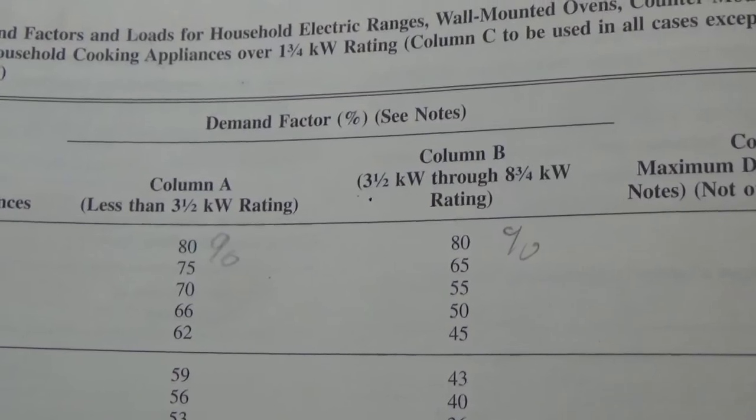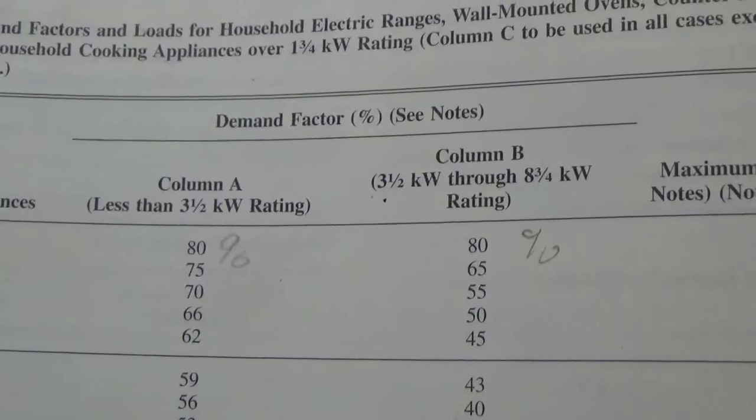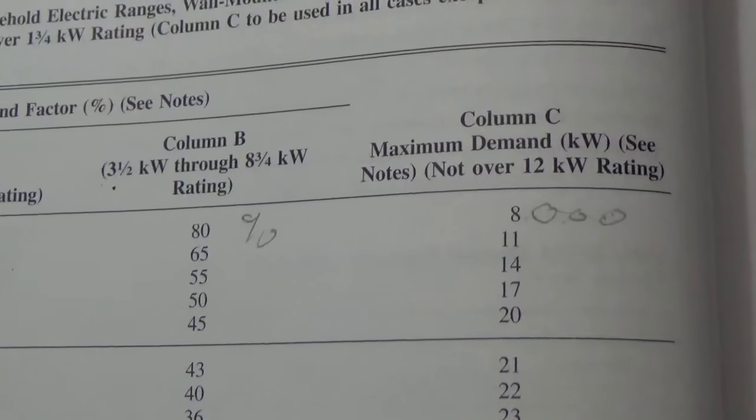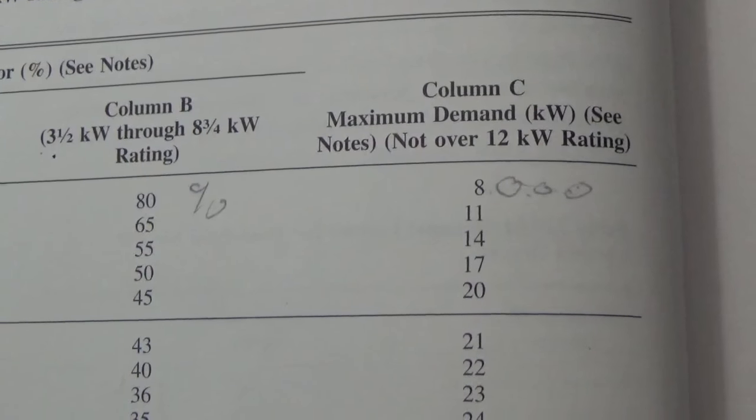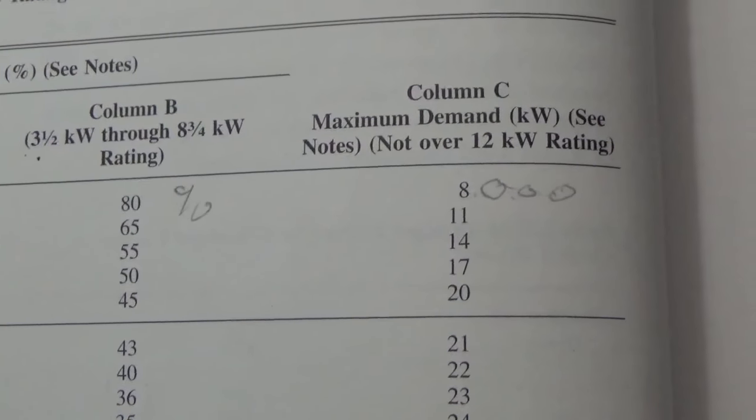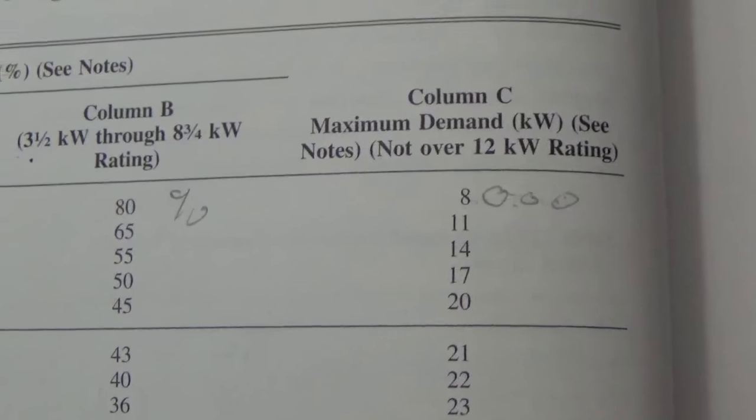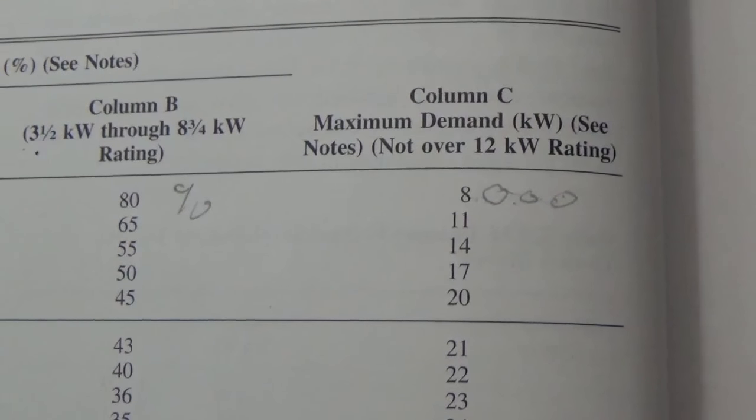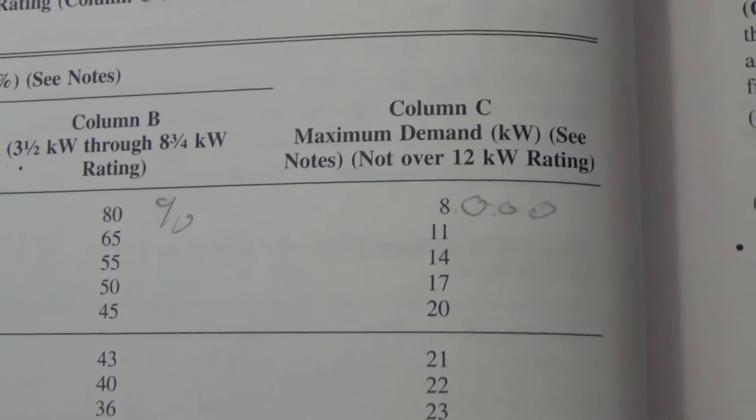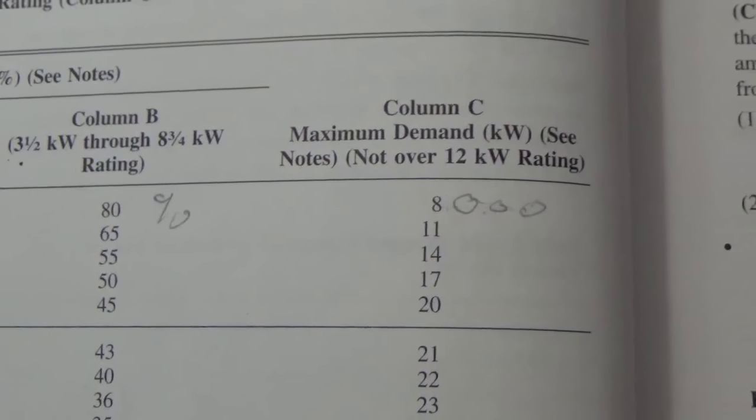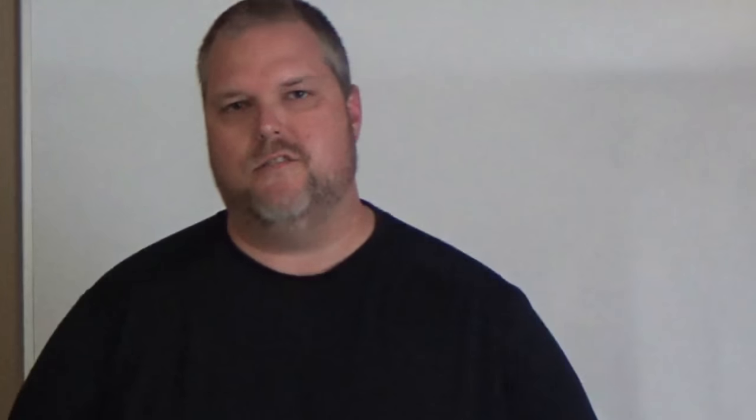When we get to column C, they're rated in thousands, so I put three zeros. The first one is 8,000, the second one would be 11,000, third one would be 14,000, and you get the picture.